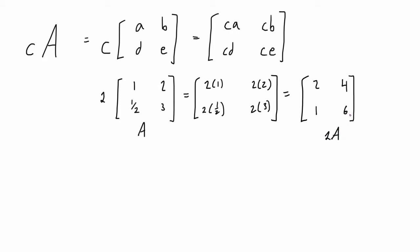Let's move on to matrix addition. So if we have a matrix B that is an M by N matrix, we can add it to another matrix C that is also M by N. As long as they have the same number of rows and the same number of columns, we can add them together.